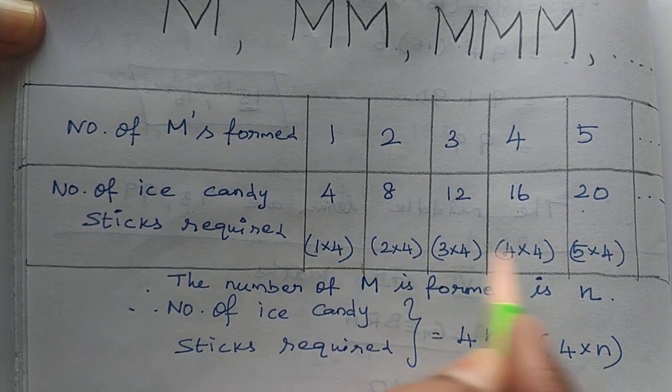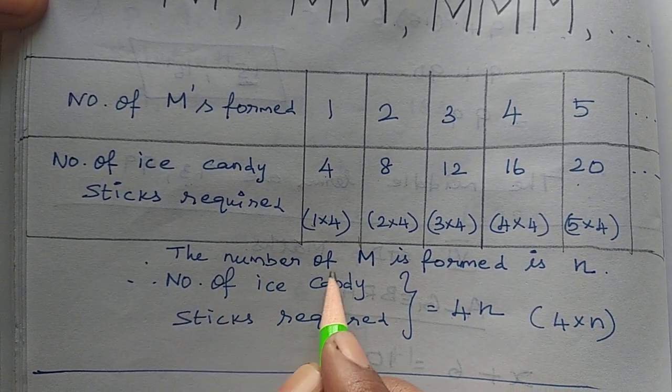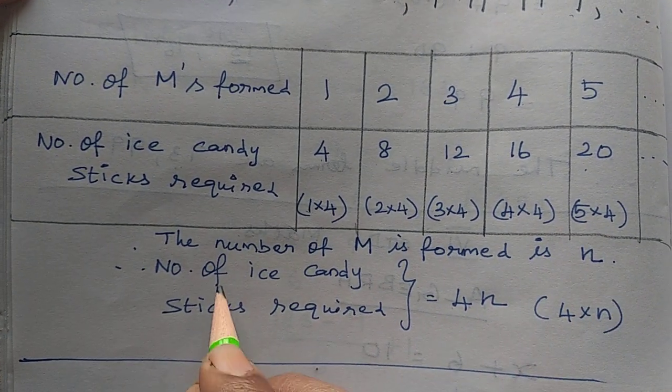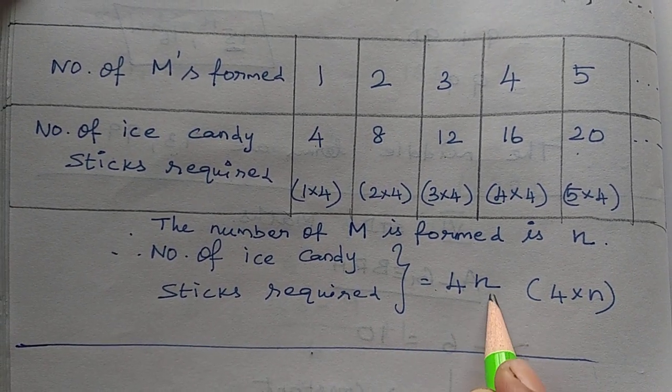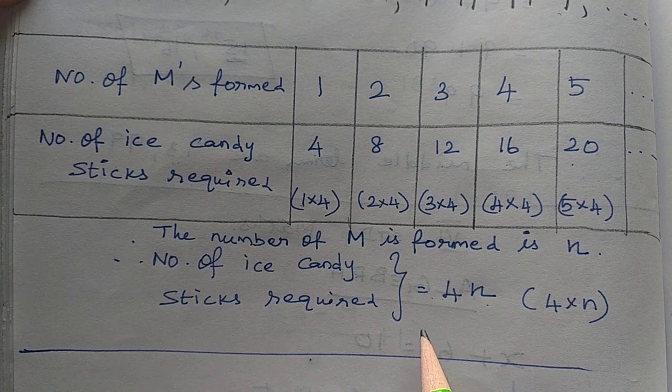So write this like, therefore the number of M is formed in N, number of ice candy sticks required, 4 into N. This 4N is the answer complete.